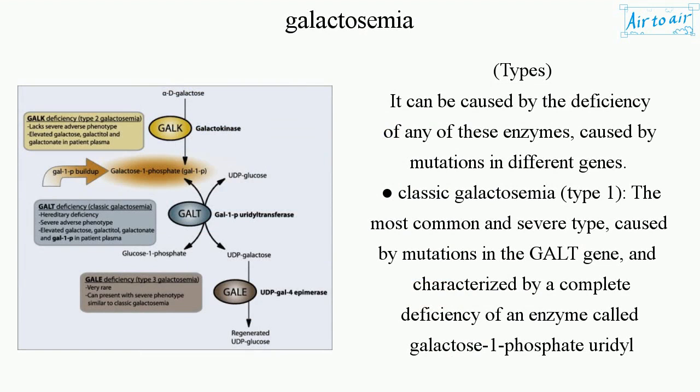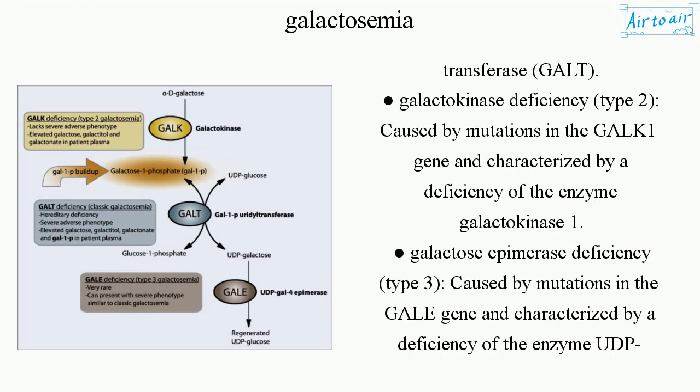Classic Galactosemia (Type 1): The most common and severe type, caused by mutations in the GALT gene, and characterized by a complete deficiency of an enzyme called galactose-1-phosphate uridyltransferase (GALT). Type 2 is caused by mutations in the GALK1 gene and characterized by a deficiency of the enzyme galactokinase 1.